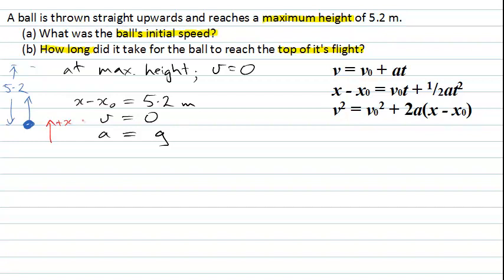We'll make that the positive x direction will be upwards. And that means our acceleration will actually be minus g. Our change in displacement will be plus 5.2 metres heading upwards. So our acceleration here will be minus 9.8 metres per second squared.